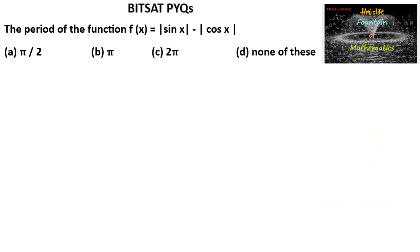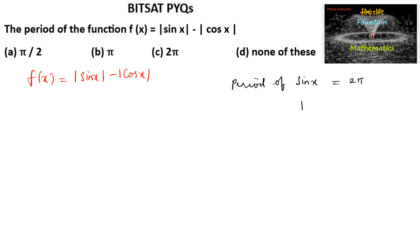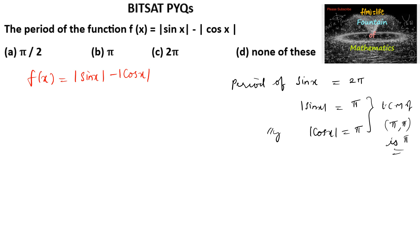We need to find the period of f(x) = |sin x| - |cos x|. The period of sin x is 2π, so the period of |sin x| is π. Similarly, the period of |cos x| is π. So for |sin x| - |cos x|, the LCM of π and π is π. The period of f(x) is either π or a sub-multiple of π.